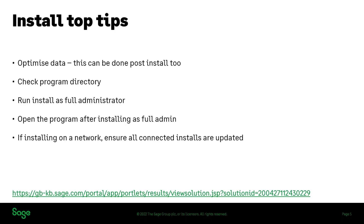The next thing to do is check your program directory — this is where the program is installed on your computer. Whenever you install an update, the installer will recognize that you already have Sage 50 Cloud Payroll installed and will ask if the path shown is the correct program directory. Making note of this ensures it's upgrading the right version.